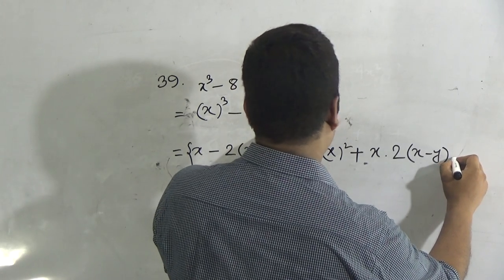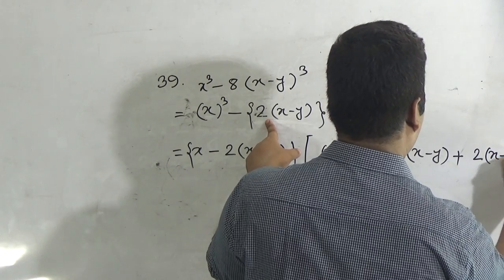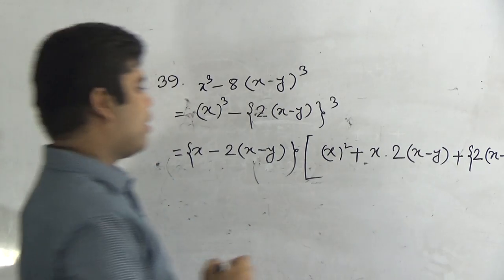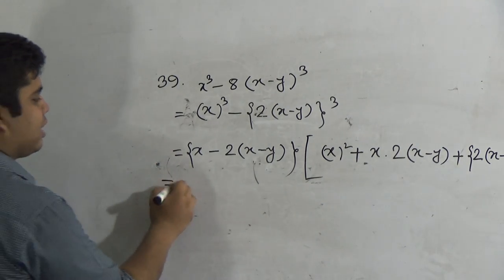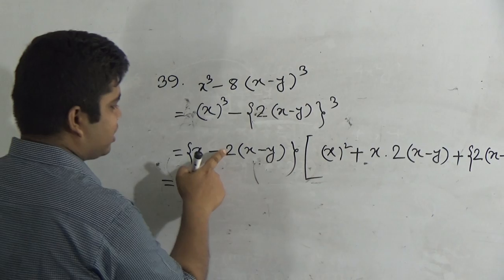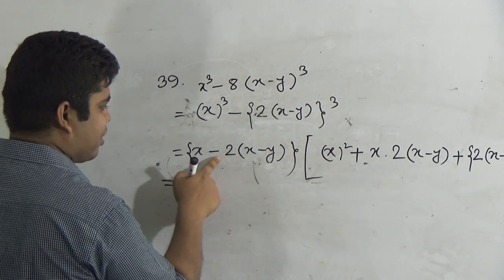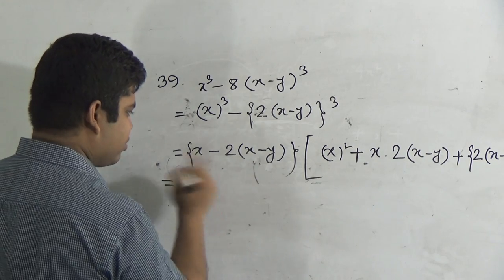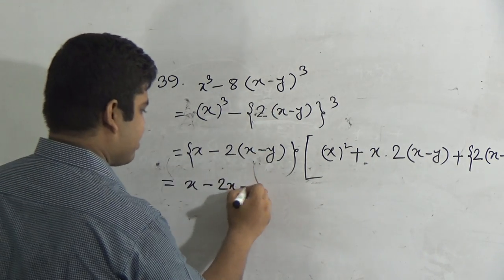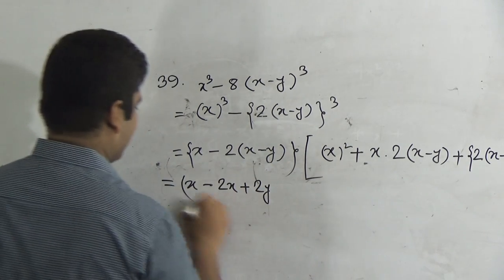After that, plus 2(x minus y) whole square. Now we do the calculation. For the first bracket: x minus 2(x minus y). We multiply minus 2 by x to get minus 2x, and the minus sign with minus y gives plus 2y.